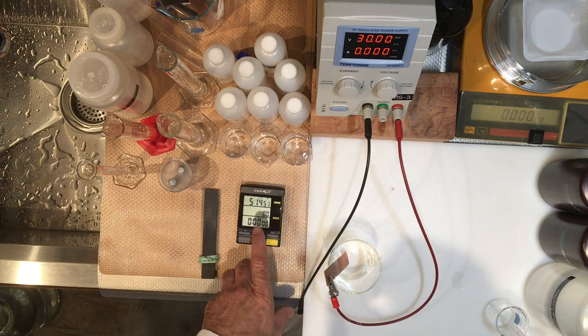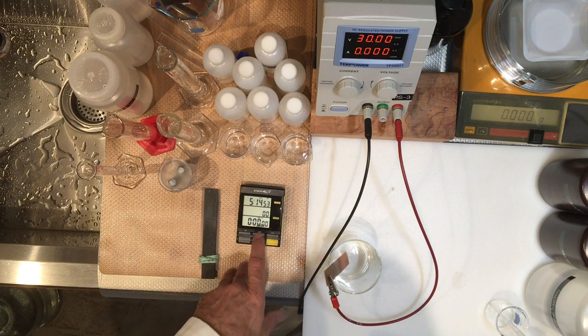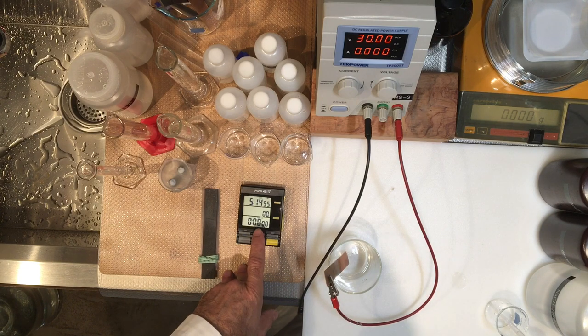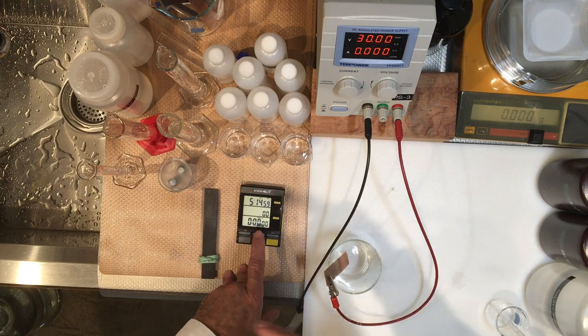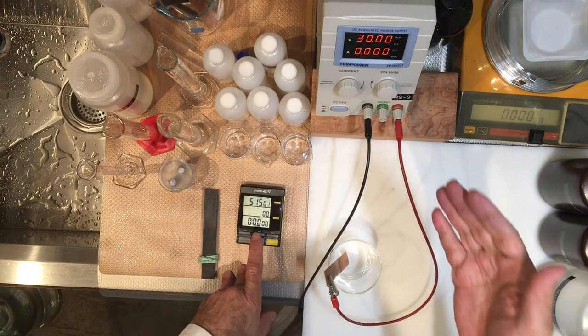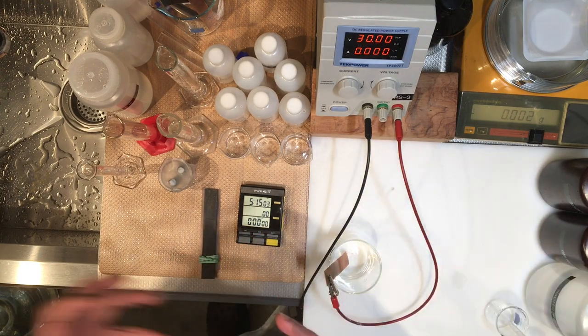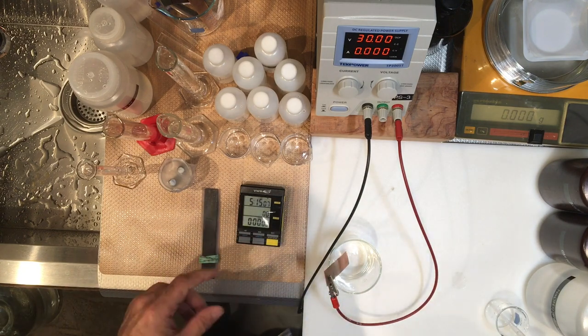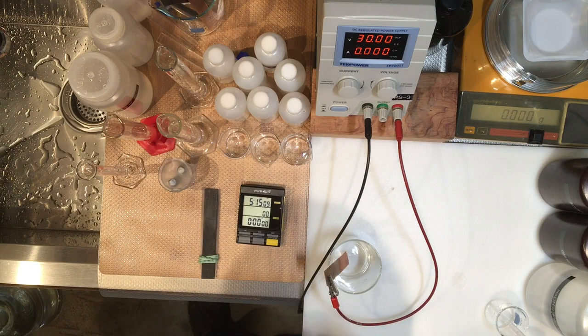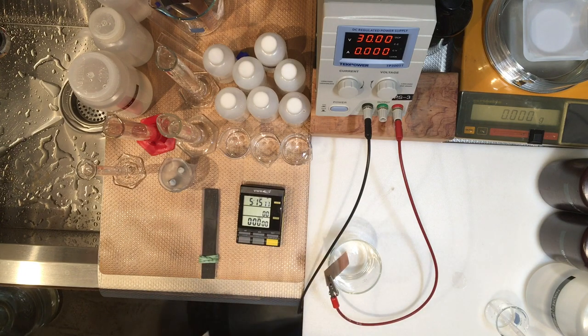So I'm going to set an electrolysis time of nine minutes. So we're passing coulombs equivalent to nine minutes and one amp, which is one coulomb per second. So you can figure this out how many coulombs are going to be passed through the solution.